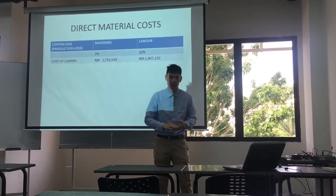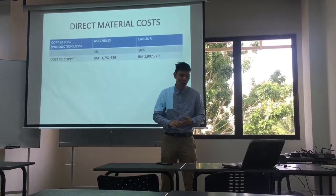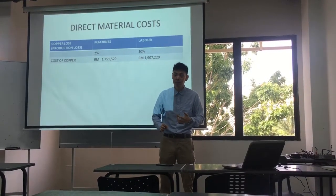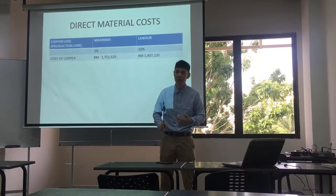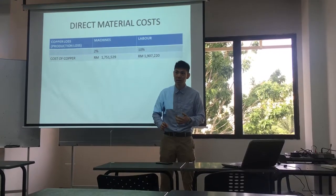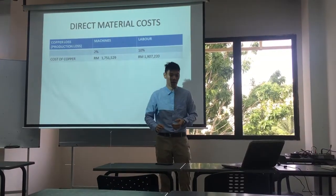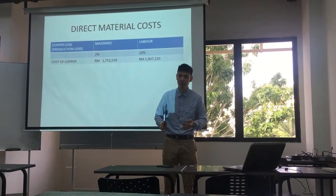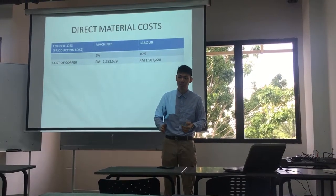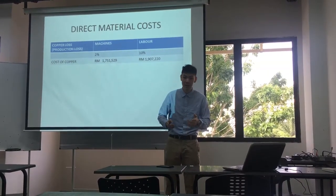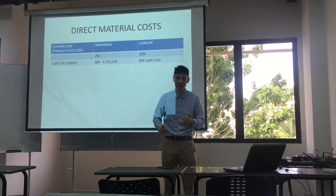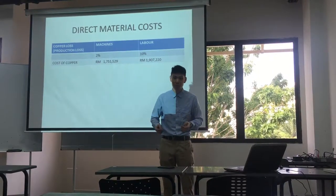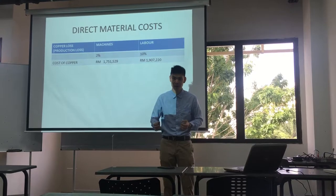When it comes to production, we will look at direct material costs as well as other costs not taken into consideration. First and foremost, we talk about direct material costs. For this case, copper as well as chemicals are used in production as direct materials.